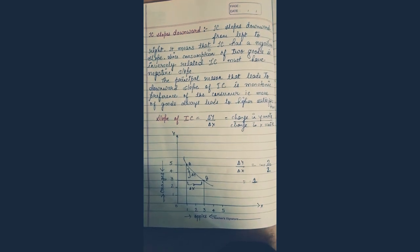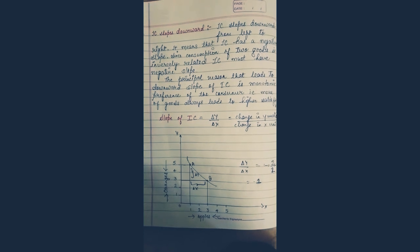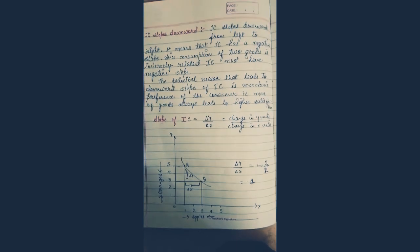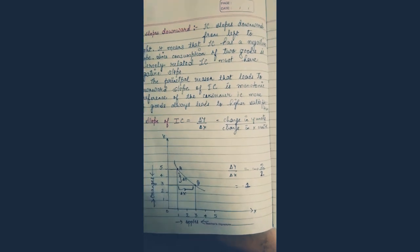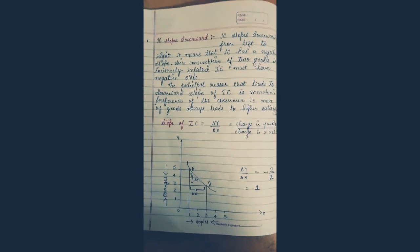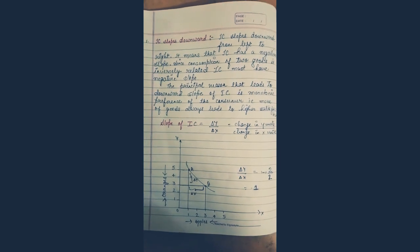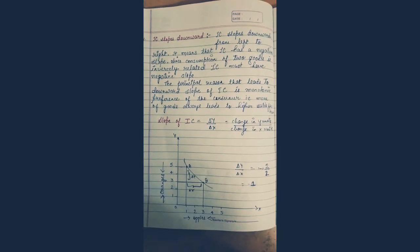As discussed previously, IC slopes downward — it is due to monotonic preference. Monotonic preference refers to more of goods always leading to higher satisfaction. More of goods always leads to higher satisfaction — this is called monotonic preference, and monotonic preference is the reason that IC slopes downward.